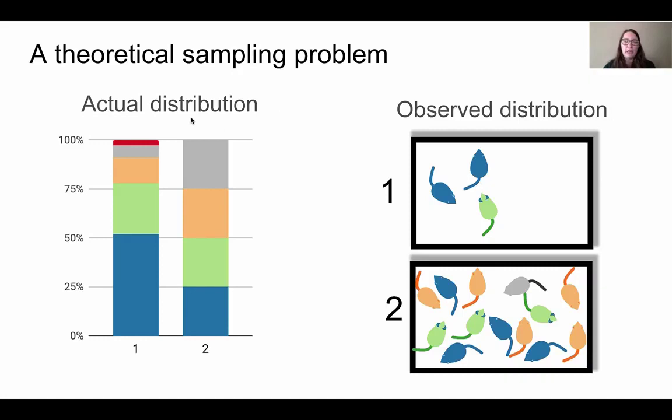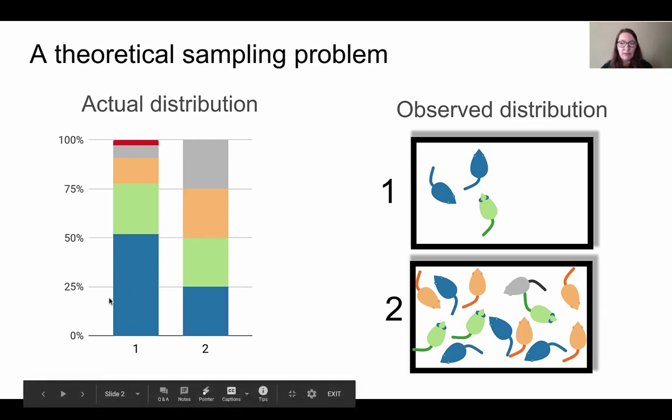If you compare the actual and observed distribution of sample one, there are some big differences. For example, sample one is completely missing the red, gray, and yellow colors. Even further, this blue mouse here looks like it's present two out of three times, making up about two-thirds of the community, whereas in the actual distribution it only makes up about 50 percent.